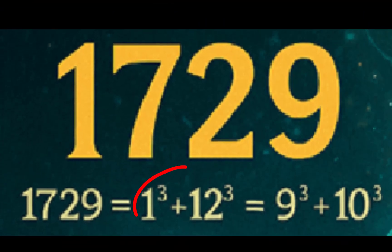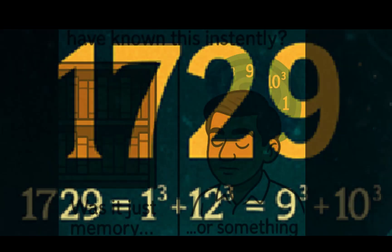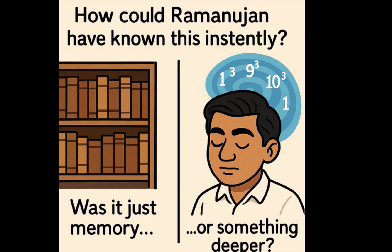1729 equals one cubed plus 12 cubed, and 1729 equals nine cubed plus 10 cubed. How could Ramanujan have known this instantly? Was it simply memory, or was there something deeper at play?